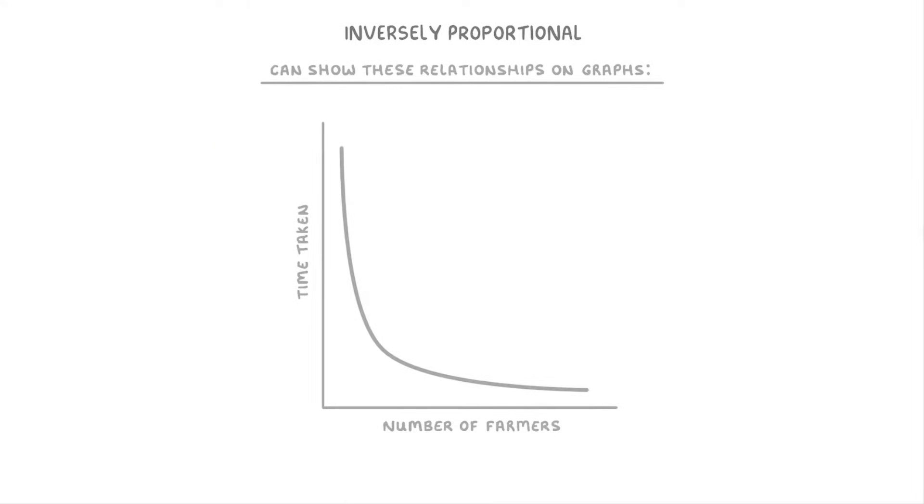Next, we need to look at how we can show these sorts of relationships on graphs. And these will always have this sort of downward sloping curve.